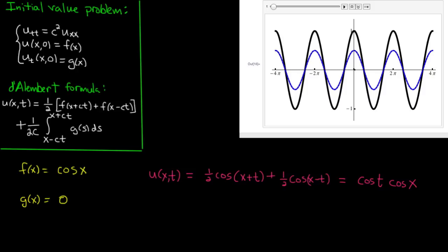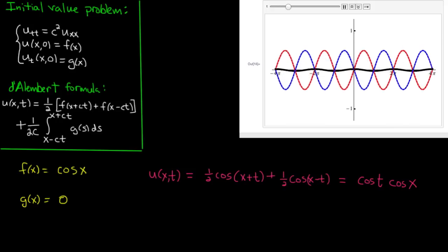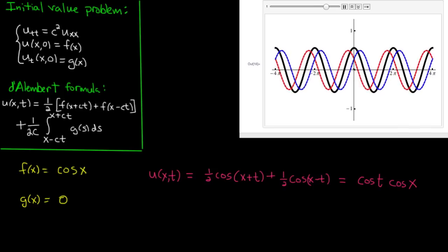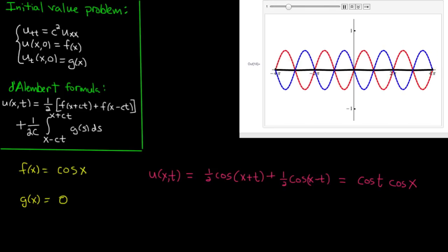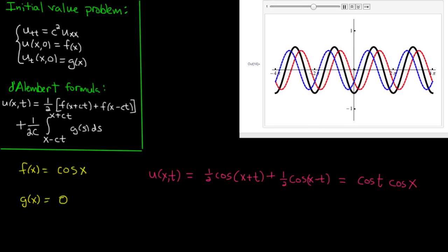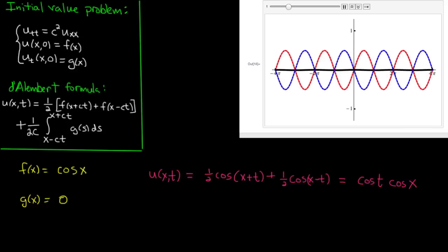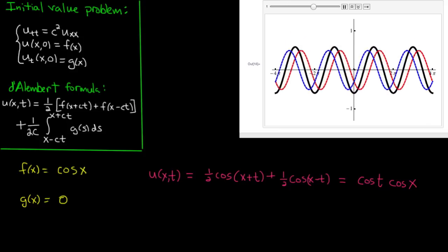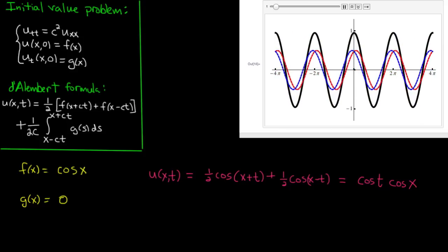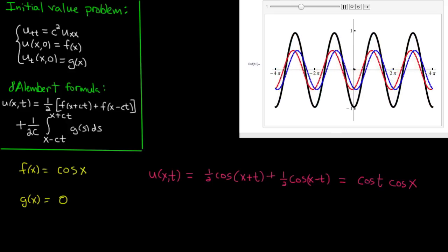Since this is kind of an interesting example, I made another animation where we see in solid black the original function u, and in blue we'll see the left moving wave, and in red we'll see the right moving wave. And the black line is the sum of the two, so it's the combination of the heights. So you see how this one standing wave can be a sum of two traveling waves moving in opposite directions.